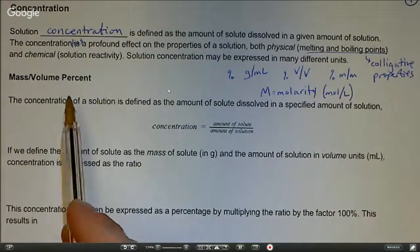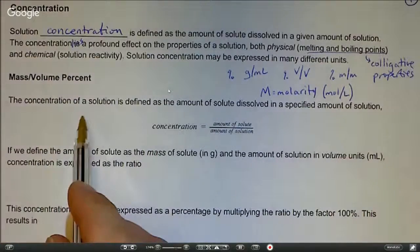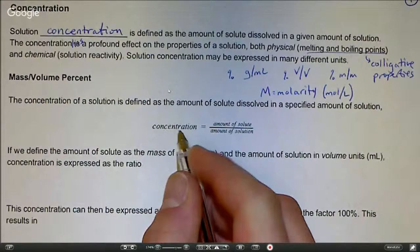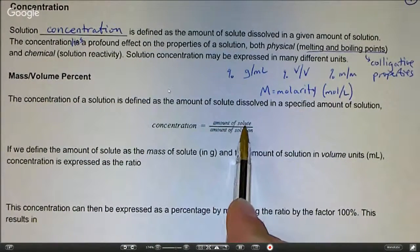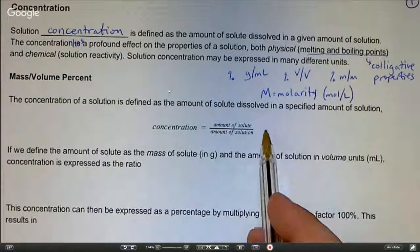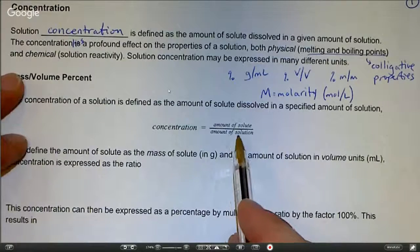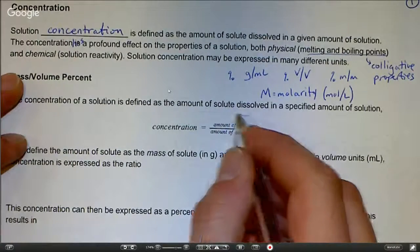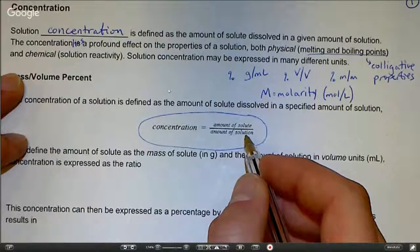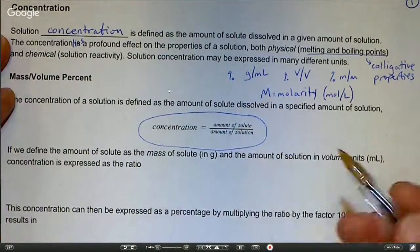Looking at mass volume percent, the concentration of a solution is defined as the amount of solute dissolved or dissociated in a specified amount of solution. This is our general equation for concentration: solute divided by the amount of solution, kind of a ratio.